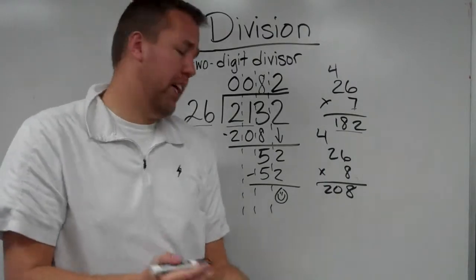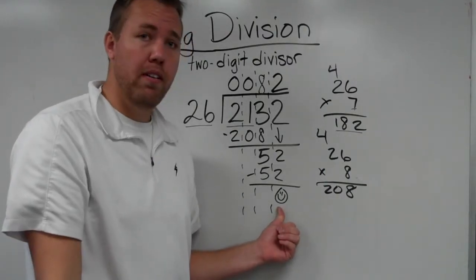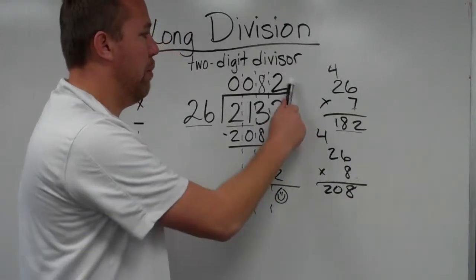This is long division with two-digit divisors. If there is anything left over, then it would be our remainder.